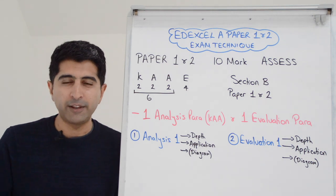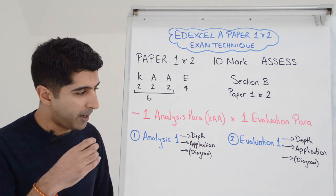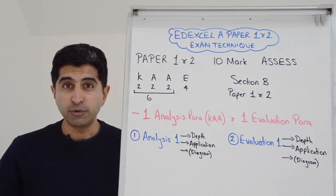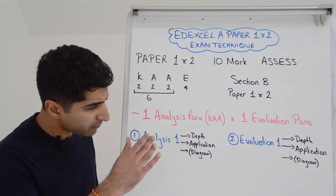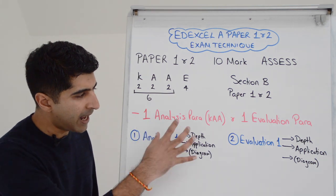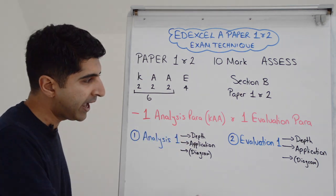But if there is a diagram which illustrates what you're writing, you draw it. Just make sure you label your diagram. Make sure you refer to your diagram in your writing and then you get full credit. So always just think diagram. But depth of analysis and application is crucial there.